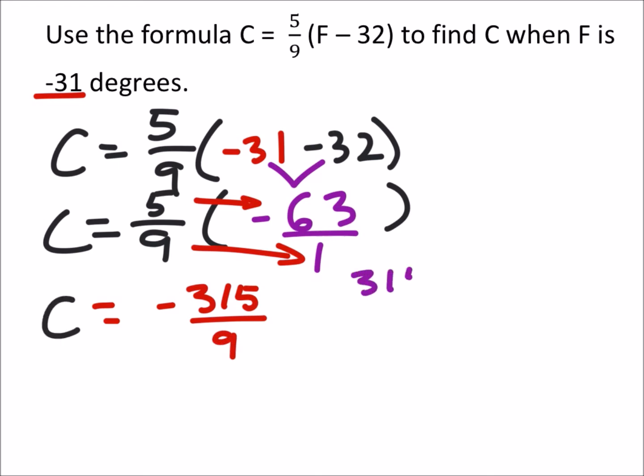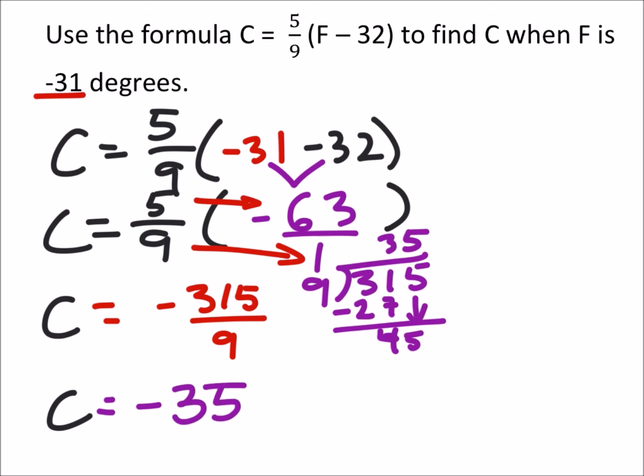Now we can do 315 divided by 9. Of course, our answer is still going to be negative. 9 goes into 31 three times. So 3 times 9 is 27. Let's subtract that out, and we're left with 4. So we'll drop the 5. 9 goes into 45 five times. So our answer is negative 35 degrees in Celsius.